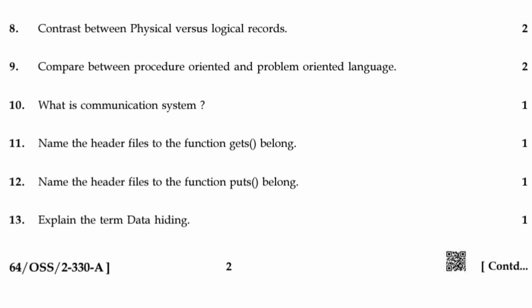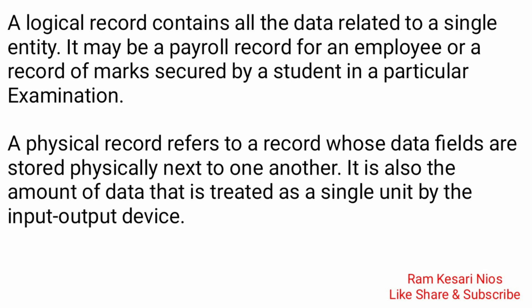Question 8: Contrast between physical and logical records. A logical record contains all the data related to a single entity — it may be a payroll record for an employee or a record of marks secured by a student in a particular examination. A physical record refers to a record whose data fields are stored physically next to one another; it is also the amount of data treated as a single unit by the input-output device.